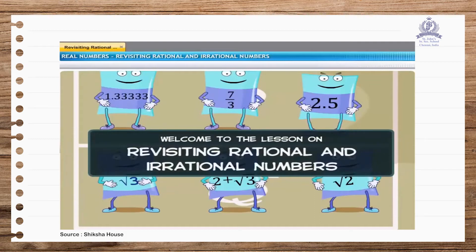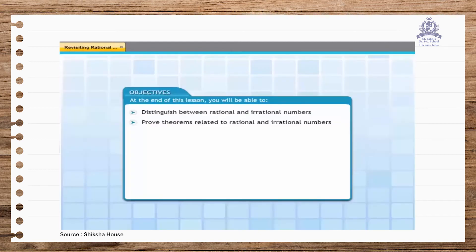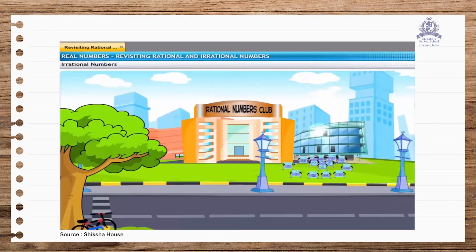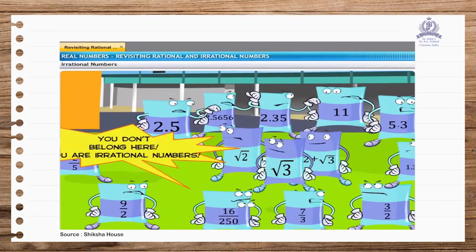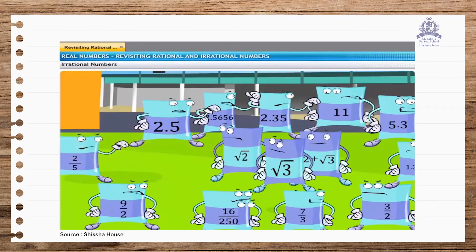Welcome to the lesson on revisiting rational and irrational numbers. At the end of this lesson, you will be able to distinguish between rational and irrational numbers. You will also be able to prove theorems related to rational and irrational numbers. There is a big commotion at the rational numbers club, which is exclusively for rational numbers, but it appears some trespassers have gotten inside.